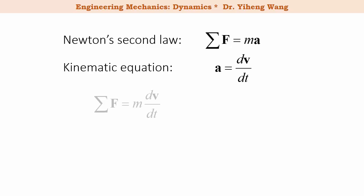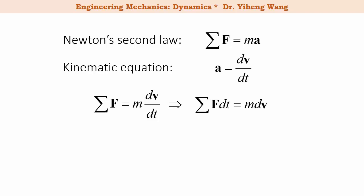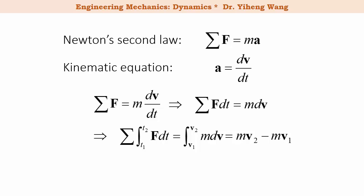By combining these two equations and multiplying dt to both sides, we can integrate both sides of this equation for a process from state one to state two. On the left hand side, the expression is integrated from the initial time t1 to the final time t2. On the right hand side, the expression is integrated from the initial velocity v1 to the final velocity v2, which equals mv2 minus mv1, since m is a constant.